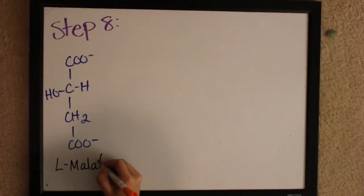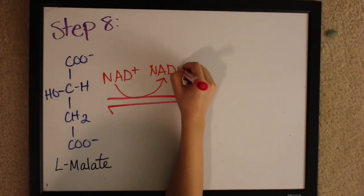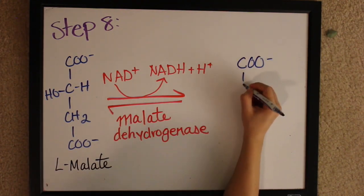Step eight is our final step. We start with L-malate, then we convert to one of the products that we actually started with. This is accomplished by using the enzyme malate dehydrogenase. The end product is oxaloacetate.